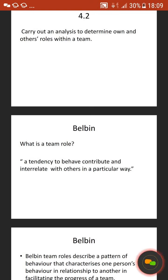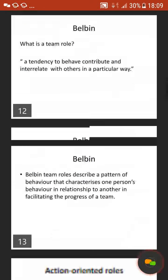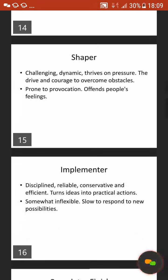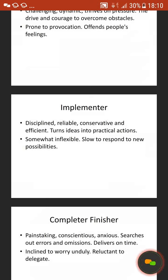The three action roles are: shaper, implementer, and complete finisher. The shaper has challenging dynamics, thrives on pressure, and has the drive and courage to overcome obstacles. However, they can be prone to being angry and offending people's feelings. The implementer is disciplined, reliable and efficient, and turns ideas into practical actions. However, they can be inflexible and slow to respond to new possibilities — basically stuck in their ways.